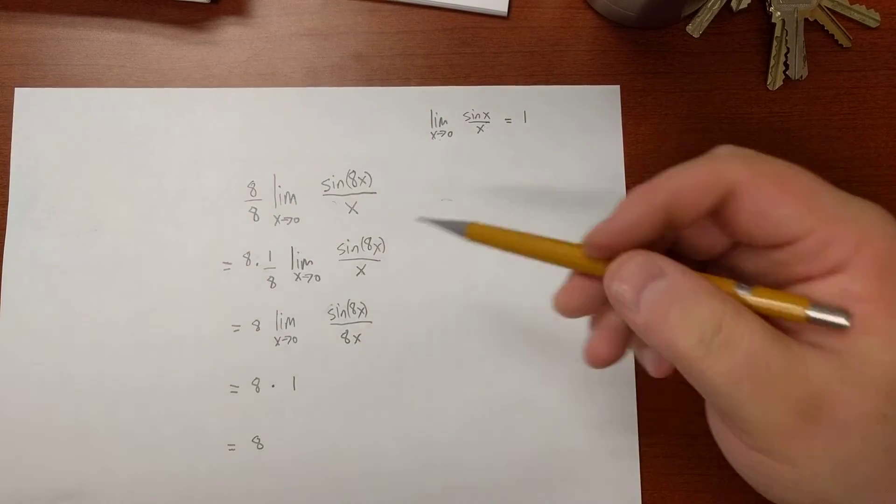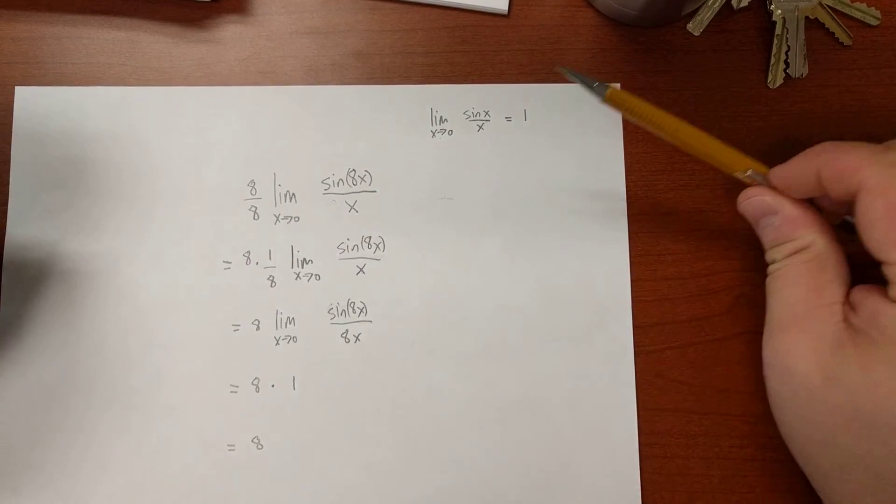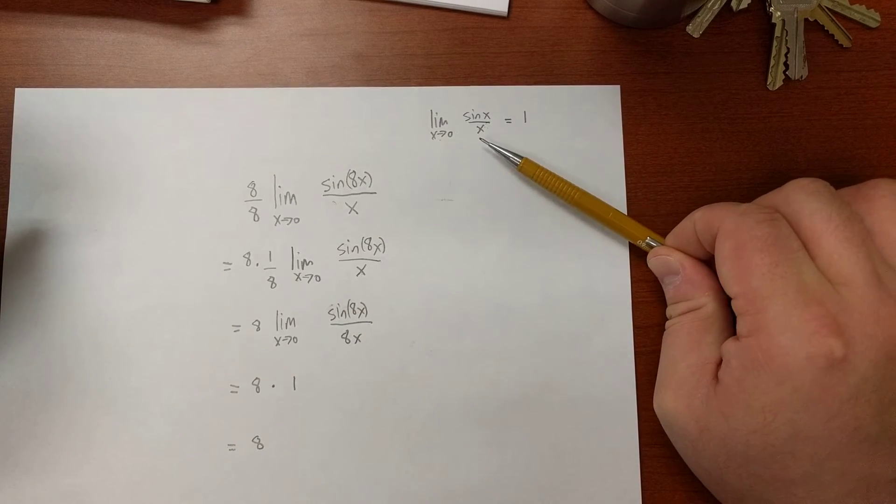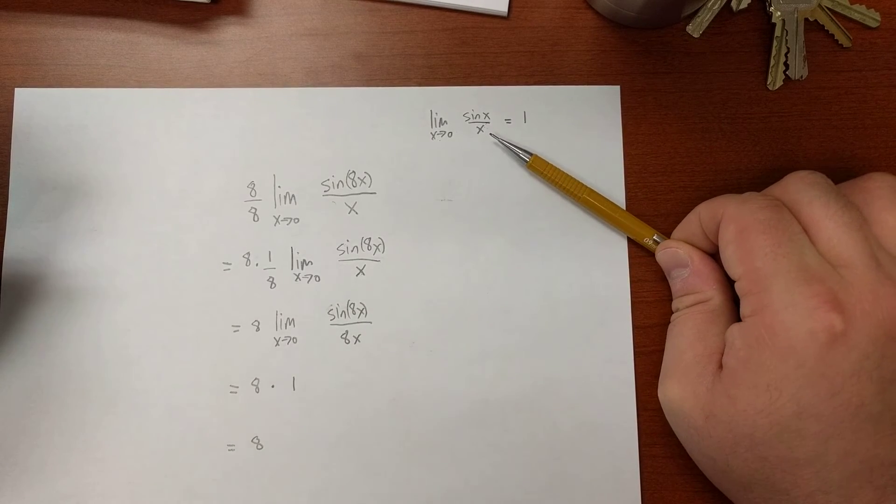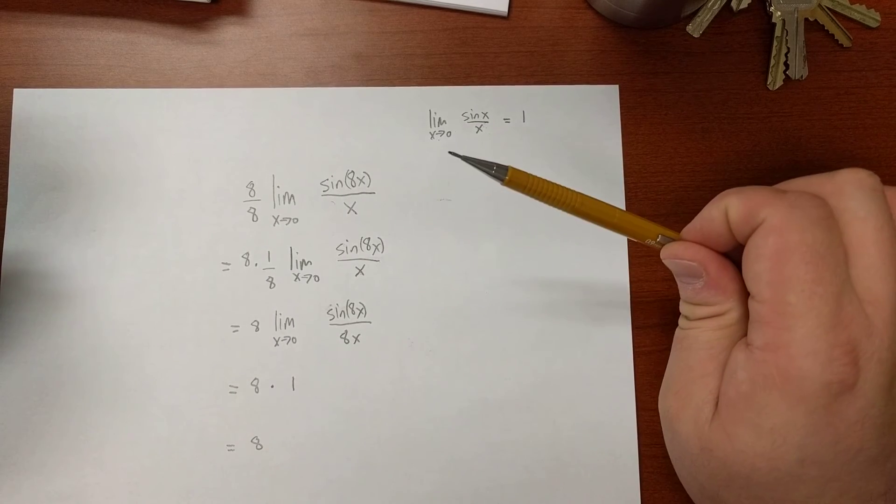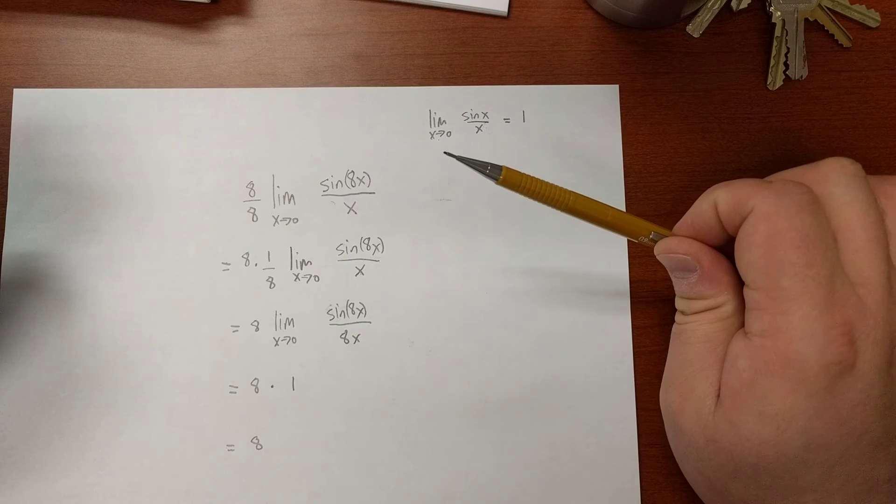And there we go. You're going to see that a lot. In fact, with trig limits we're going to do, we'll be looking for these familiar things that we've memorized. Like, we also memorized one that had to do with cosine.